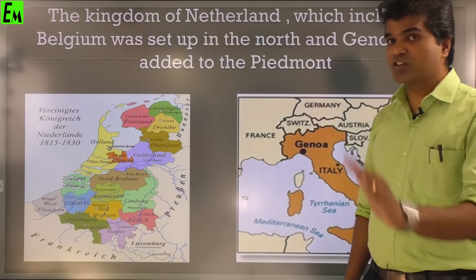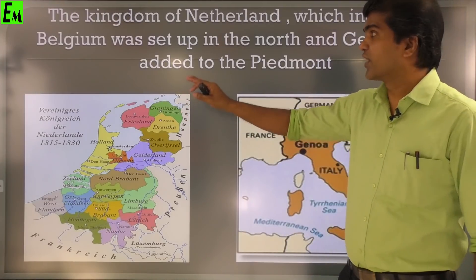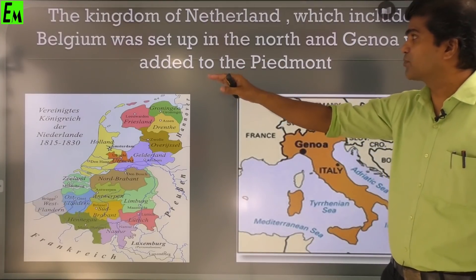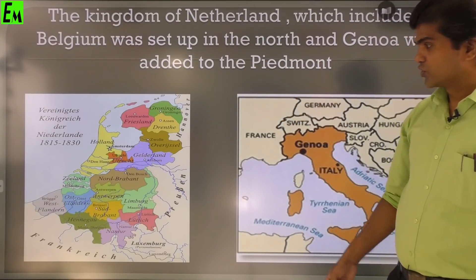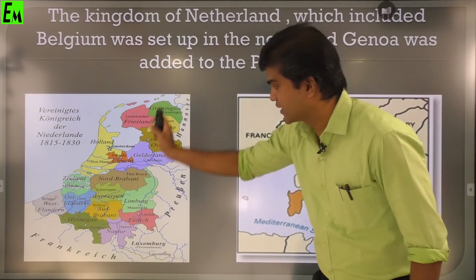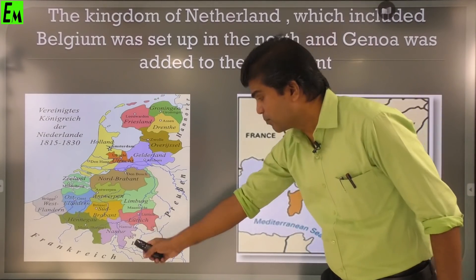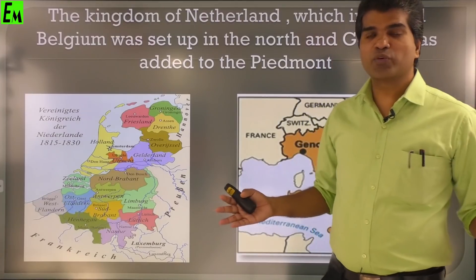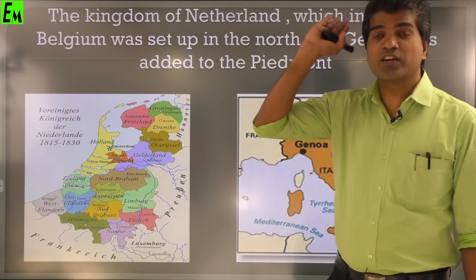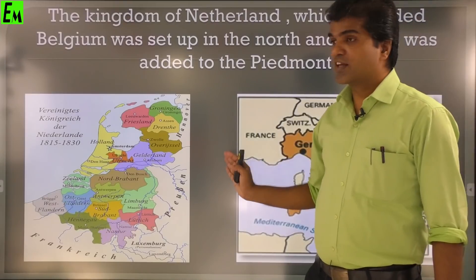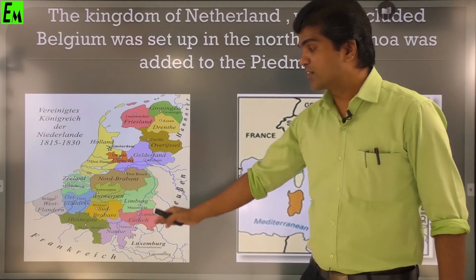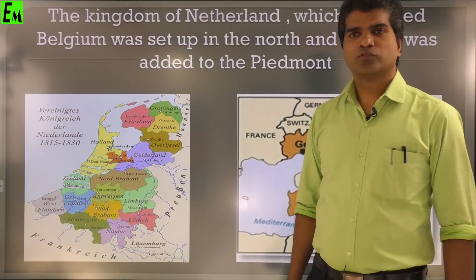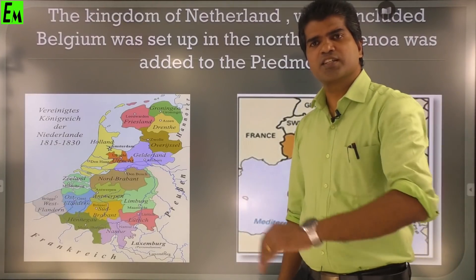The fourth decision taken by the Treaty of Vienna: the Kingdom of Netherlands, which included Belgium, was set up in the north. In the northern part of Europe they made the Netherlands, and Belgium was also added with the Netherlands. Now Belgium is a separate independent country, but at that time according to the Treaty of Vienna, Belgium was added with the Netherlands. That was the fourth decision taken by them.